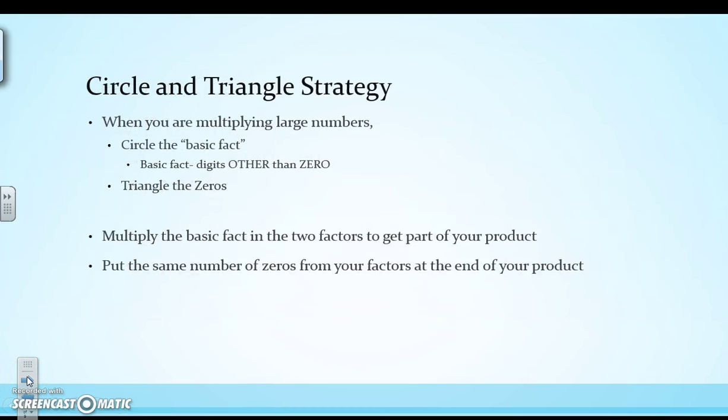So I would recommend writing this down in your notebook, just so you have it. When you are multiplying large numbers, I recommend that you circle the basic facts. The basic fact is pretty much any digit other than 0. And then triangle the 0s in both of the factors. You're going to multiply the basic fact in the two factors to get part of your product. The product is the answer to a multiplication problem. And then you put the same number of 0s from your factors that you triangled at the end of your product.